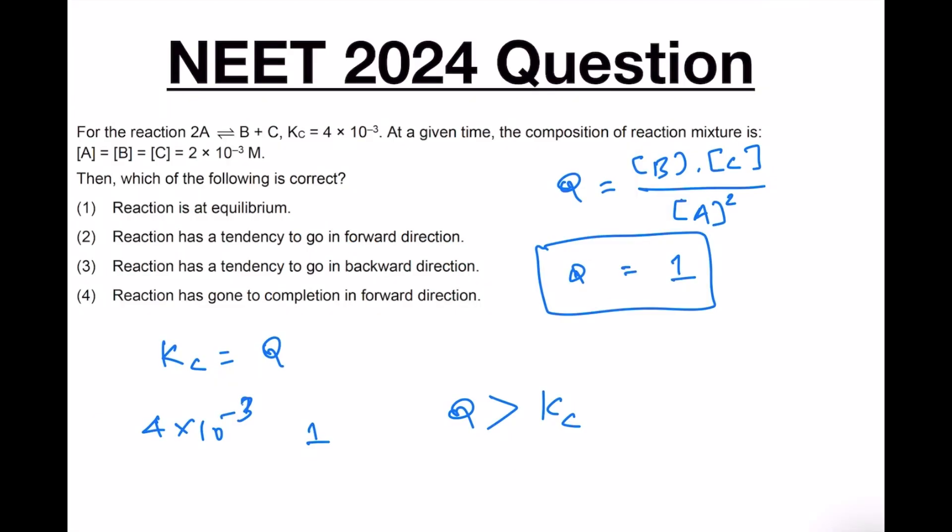Because if the reaction has to achieve equilibrium, if it has to become Kc equal to Q, then the concentration of B as well as the concentration of C should decrease and the concentration of A should increase. Therefore answer 3 is correct because the reaction has a tendency to go in the backward direction.